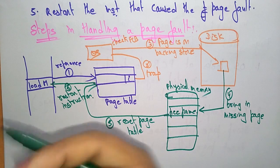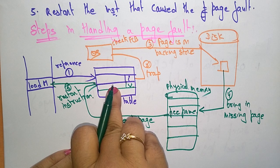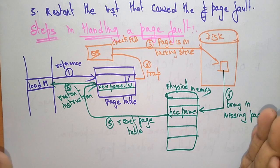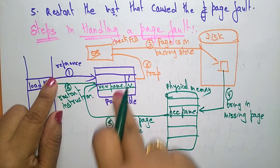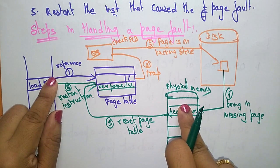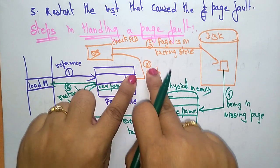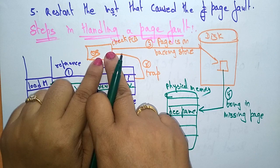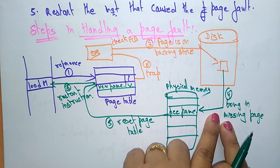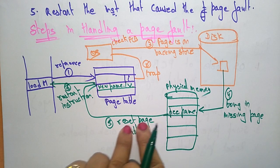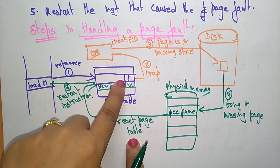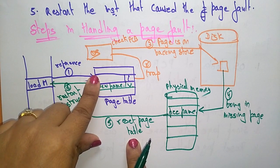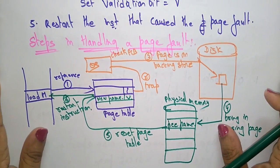After the page table is reset, it sends a signal back to the CPU to restart the instruction — to again request the demanded page. Next time it should be valid; the valid page will be present in the new frame. This is how the page fault is handled: the CPU requests the page, the page table signals the OS, the OS checks the PCB, fetches the page from disk into physical memory, resets the page table, and restarts the instruction.